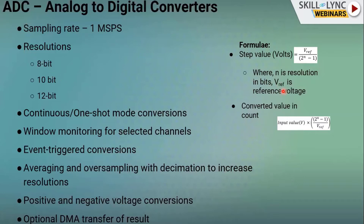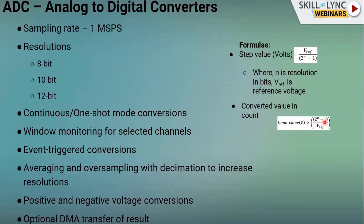The formula for the converted value in count is: input voltage multiplied by (2^n − 1) divided by the maximum reference voltage. Once conversion is completed, we get a count value in the register. To convert back to voltage, multiply that count value by the reference voltage and divide by the number of levels.